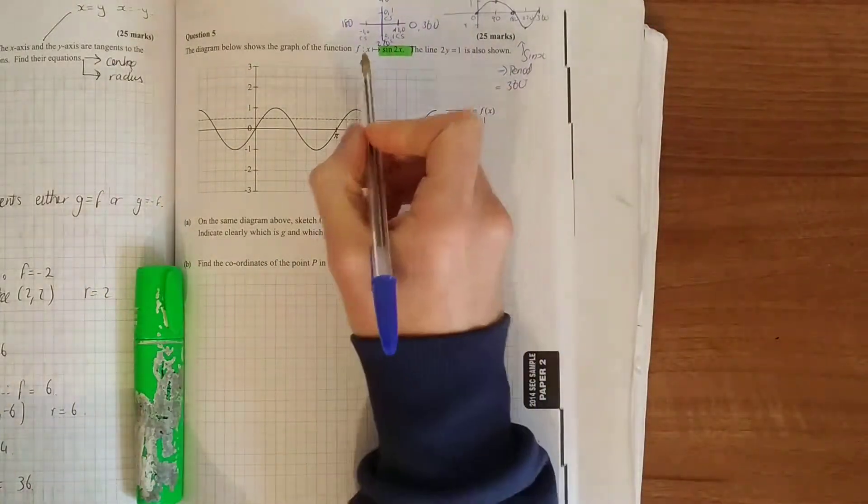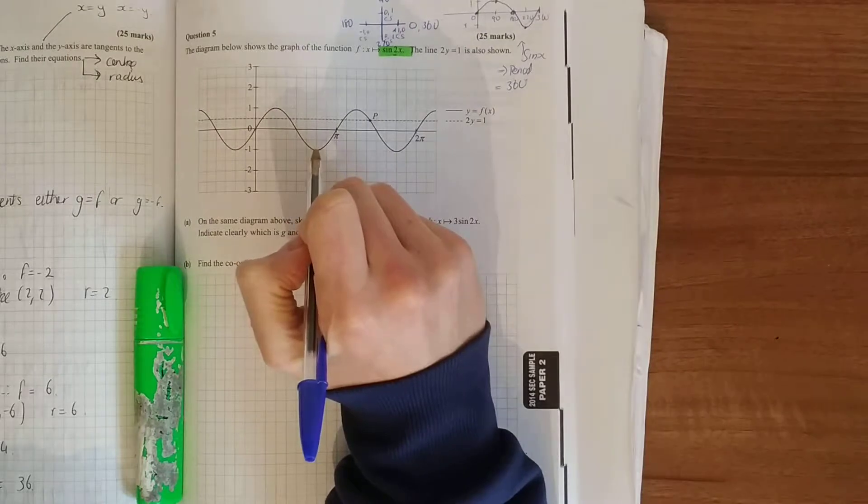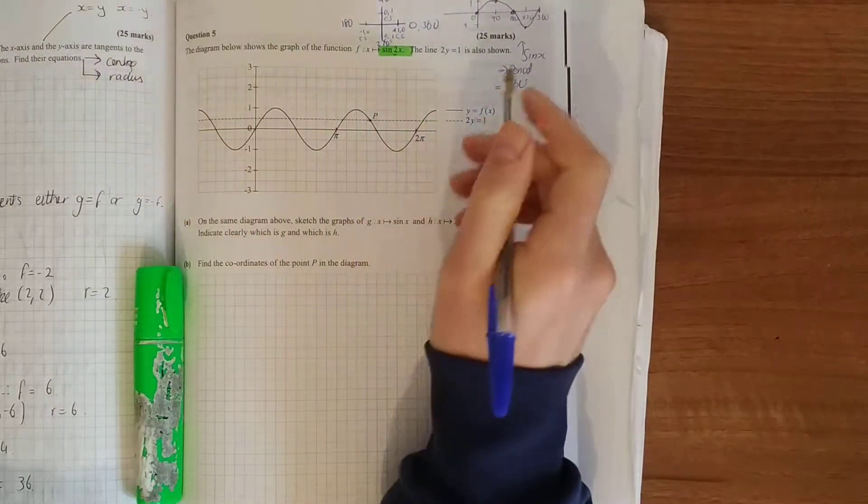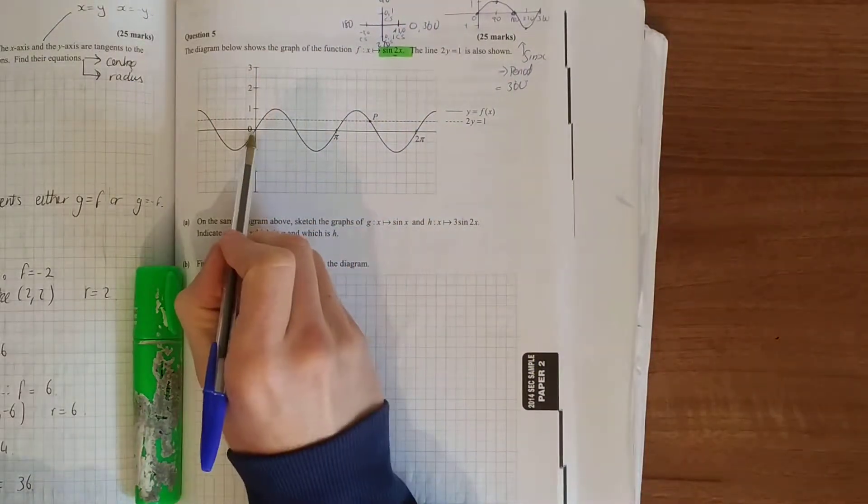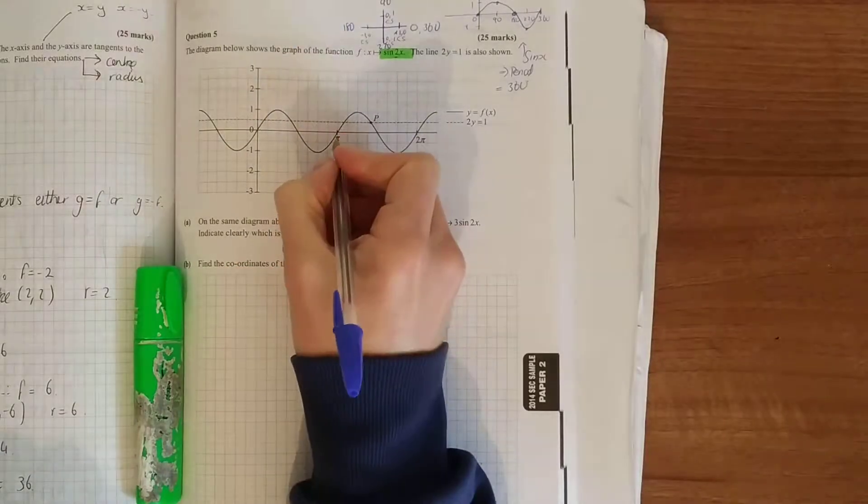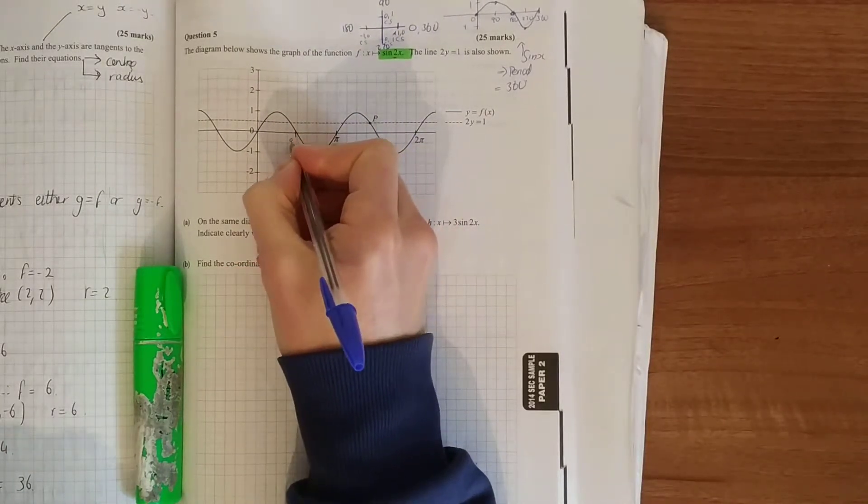If we go 2x, it goes twice as quick, completing that lap twice as quick, so the period is 180. If we look at this picture here, the time it takes is 180, so pi is 180 degrees, that's halfway, that must be 90.